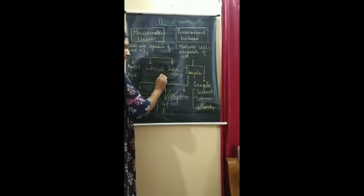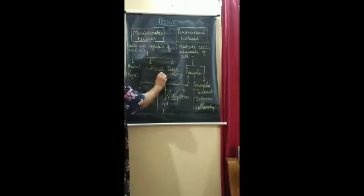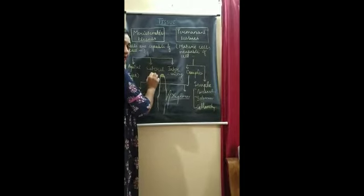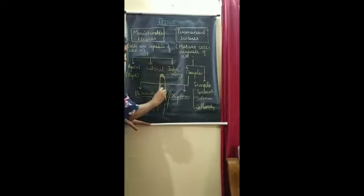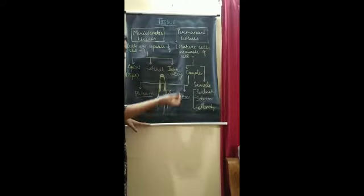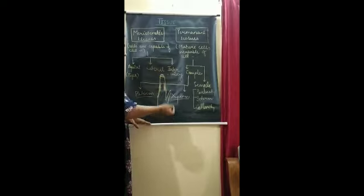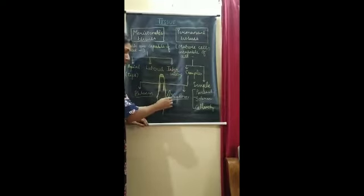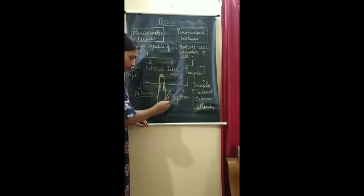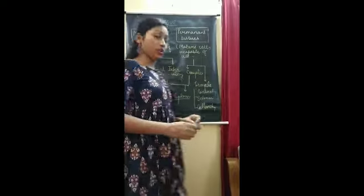Apical meristem is found at the top. The second type, lateral meristem, is found at the lateral sides of the stem or roots. Intercalary meristem is found between the two inter-nodal regions — that is the region where intercalary type of meristematic tissues are found.